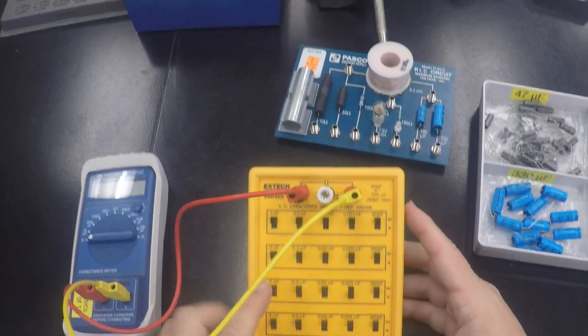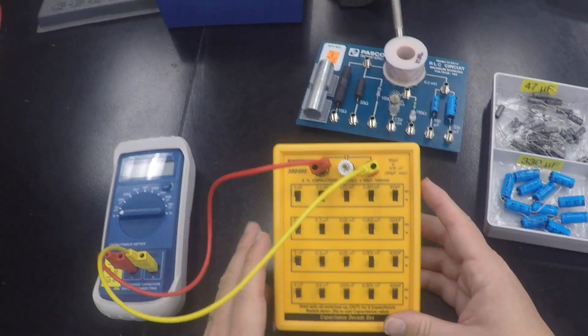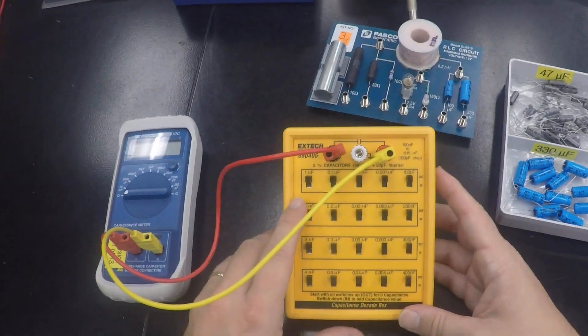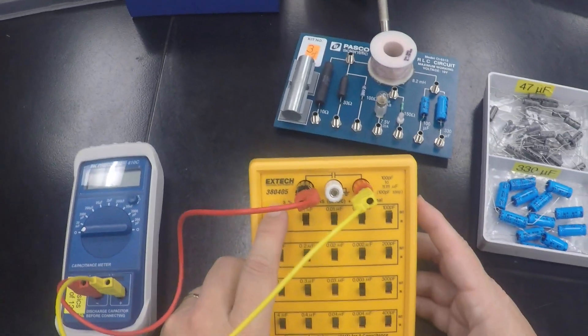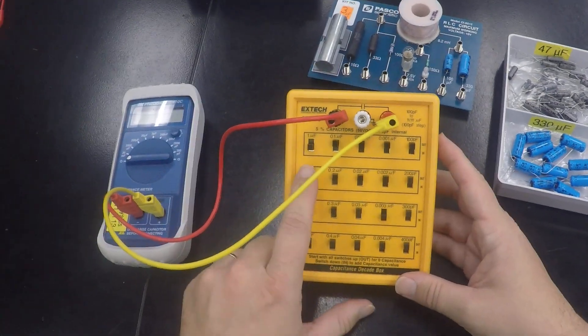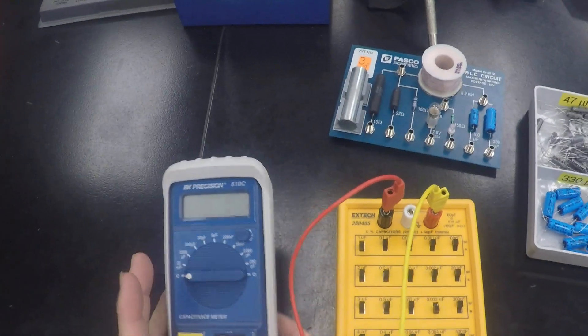And so if the switches are in the up position, that means they're off. So for instance, if I want to use this guy, let's say I all want to do is have 1 microfarad capacitance. I dial down to 1 microfarad and I come to my meter once again.